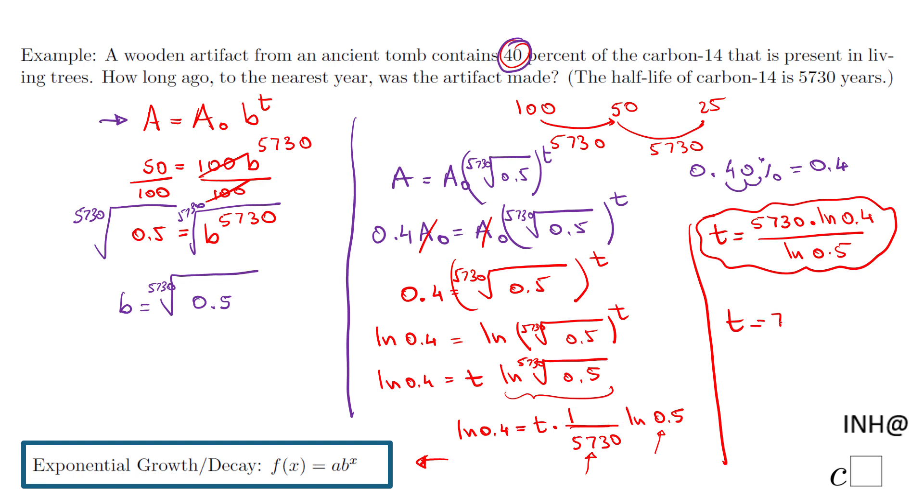I end up with 7574.6. Since we need to the nearest year, that will be 7575 years, which makes sense. If you look at my original point, somewhere between 5730 years and 10,000 years we're going to have just 40 grams - 7575 years is when the artifact was made.